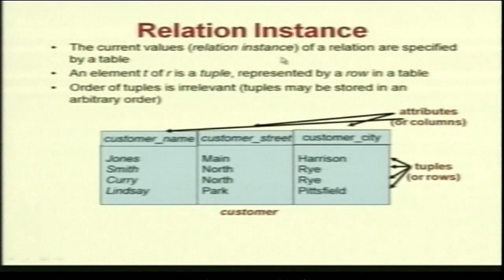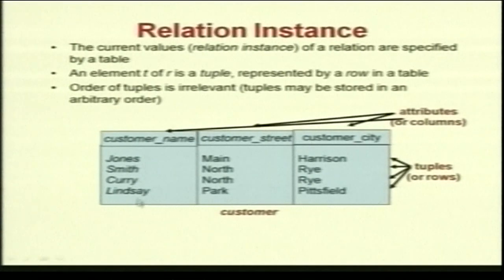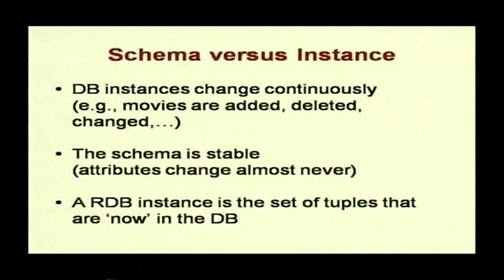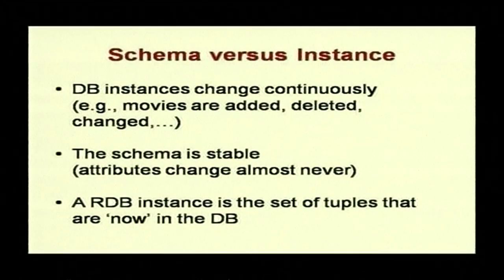The current values — the relational instance of a relation — are specified by a table. An element t of relation r is called a tuple and is represented by a row in the table. The order in which tuples are given is irrelevant; they may be stored in any order. A customer relation has attributes and tuples as its rows. Database instances change continuously — movies can be added, deleted, or changed — but mostly the schema is stable; attributes almost never change.